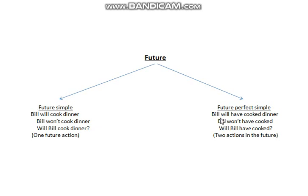Let's move on to the future. We'll talk about two tenses that are in the program. For the future simple: 'Bill will cook dinner.' There are other ways to express the future, like be + verb + -ing or be going to + verb, but the most common is will + verb. The negative form is won't or will not, and in questions you invert will and the pronoun. For the future perfect simple, we use will have plus the past participle. The negative form is won't, and again you invert will and the pronoun in questions.